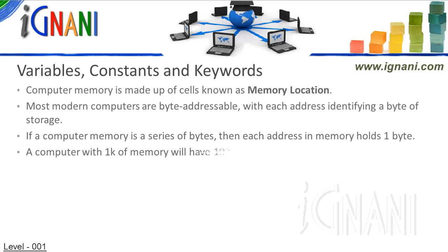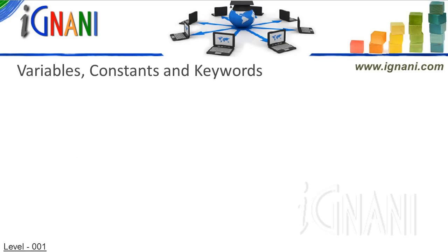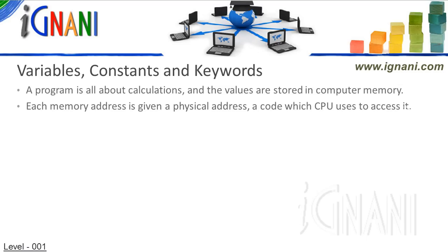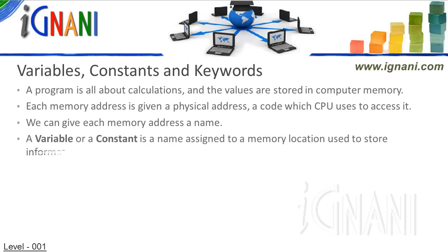If our computer has 1K of memory, then it would have 1024 elements in the memory array. A program is all about calculations. All the values and their results are stored in computer memory. Though each memory location is given a physical address which the CPU can use to access it, for us programmers to easily access them, we give them a name. Thus, a variable or a constant is a name assigned to a memory location used to store information.